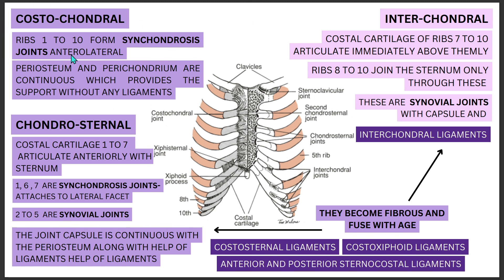The costochondral articulation: 'chondral' means cartilage and 'costal' means ribs. The white structure is the cartilage and the brown structure is the rib, so the articulation that happens there is your costochondral joint. The second is the chondrosternal — that means the cartilage and the sternum articulate. Third, we have interchondral joints where the cartilages join among each other.